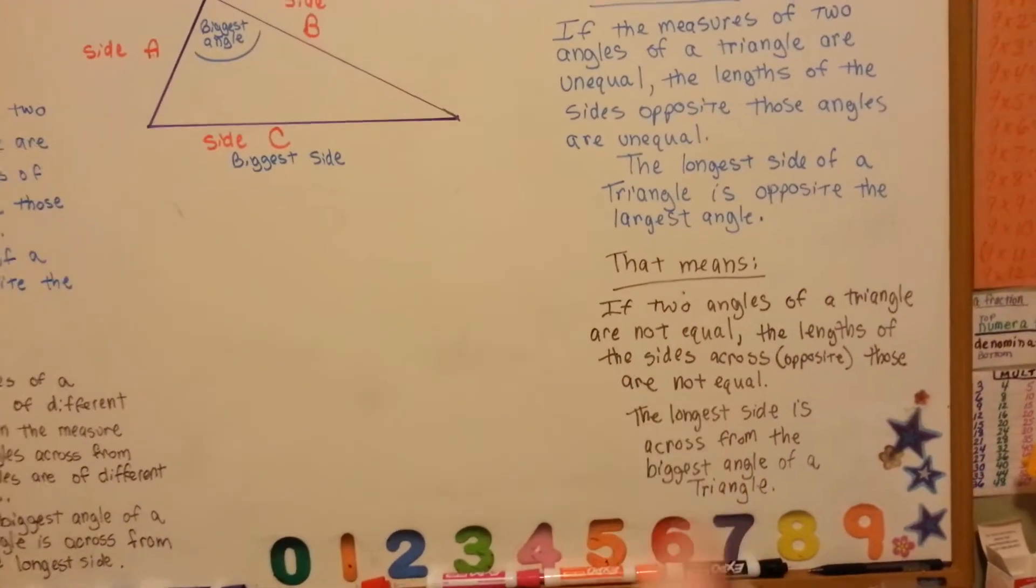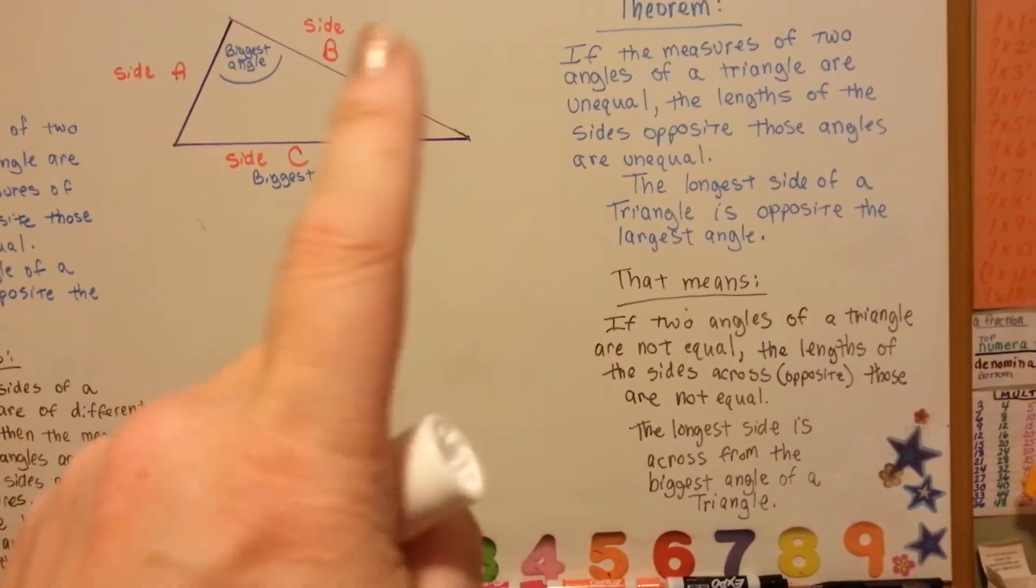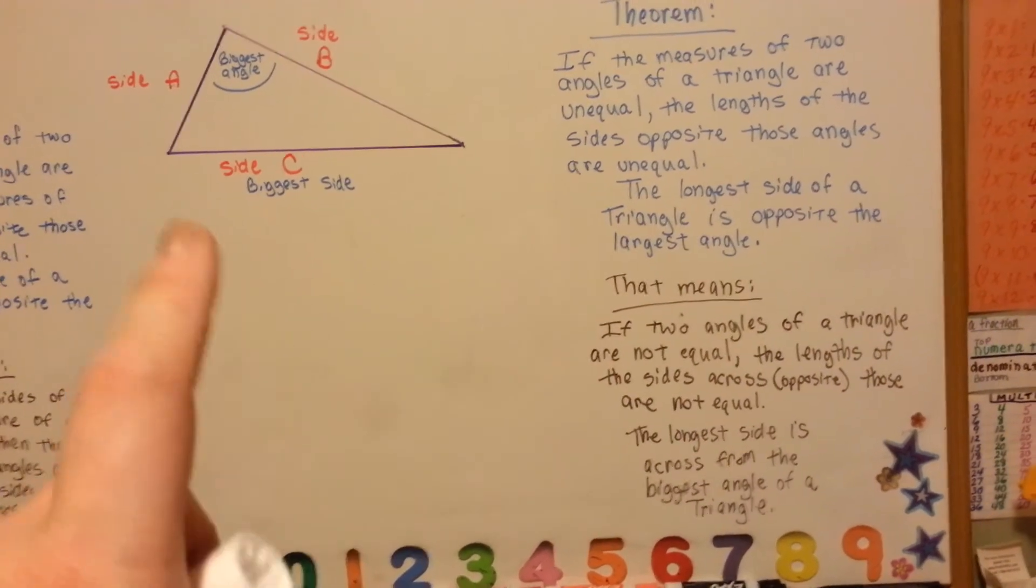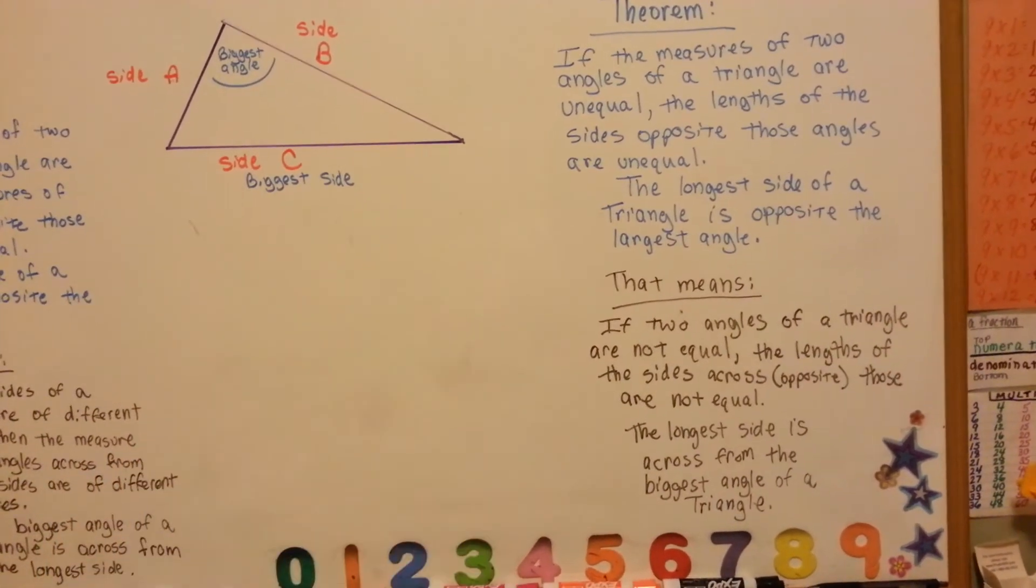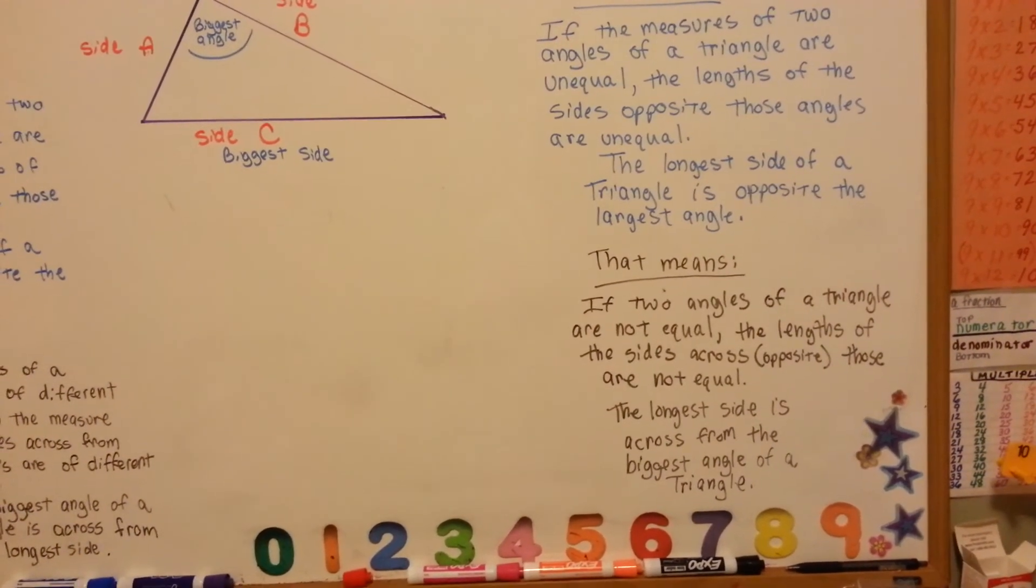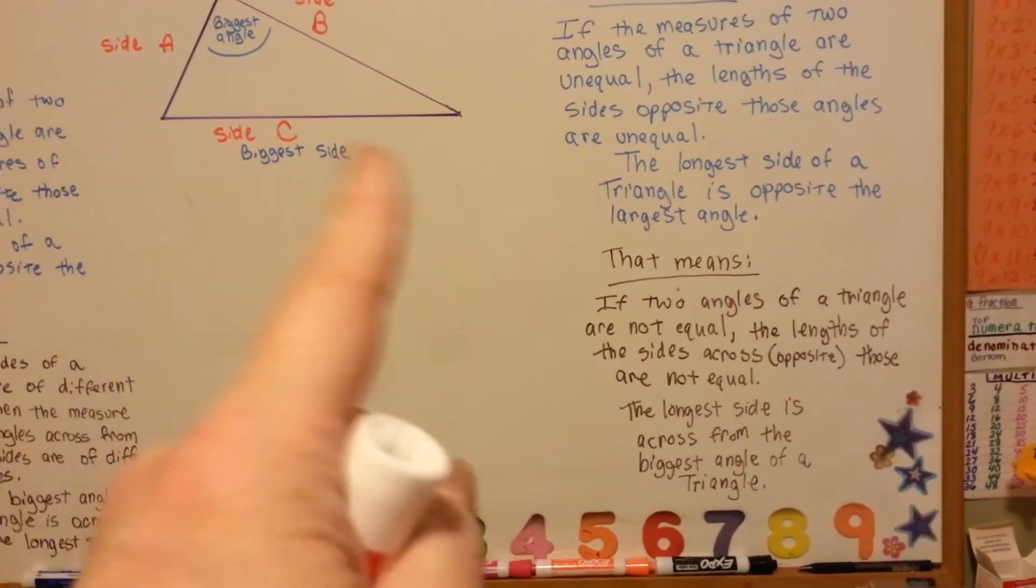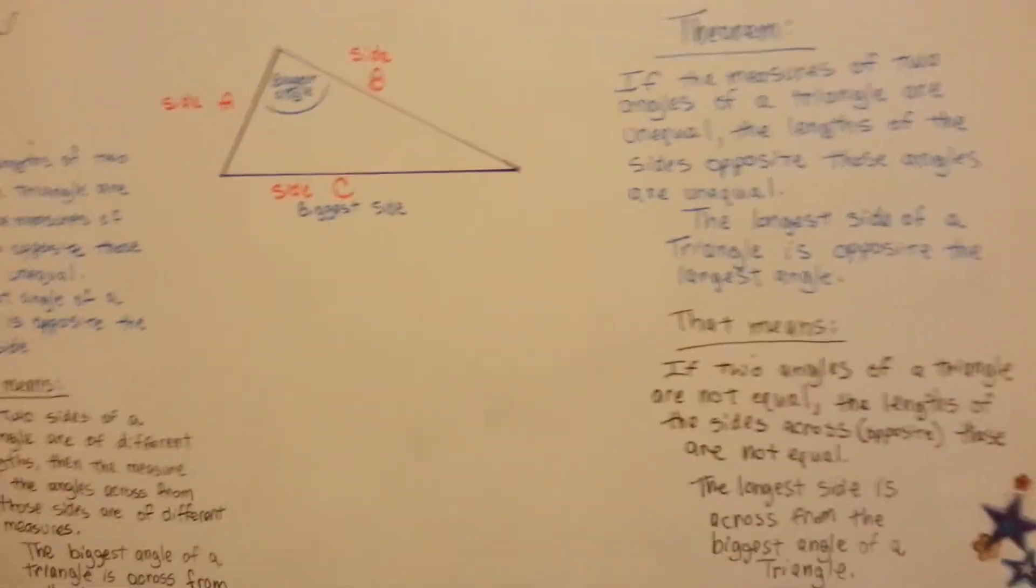So, the breakdown of this one is, if two angles of a triangle are not equal, A and B, the lengths of the sides across opposite them, this corner and this corner, are not equal. The longest side, C, the biggest side, is across from the biggest angle. So, that's pretty simple.